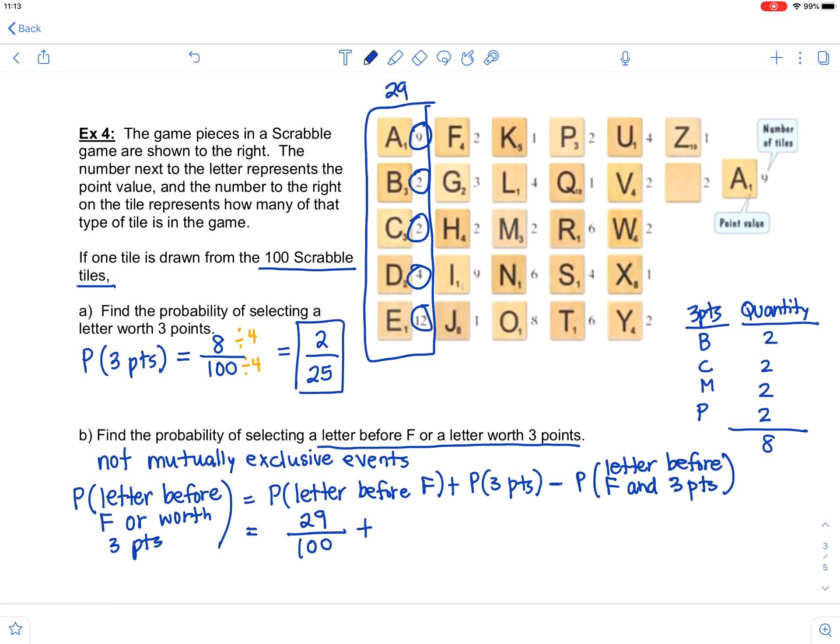The probability of getting a letter worth three points we actually did in part A. I'm going to do the non-reduced fraction to keep a common denominator. There were eight tiles worth three points out of 100.